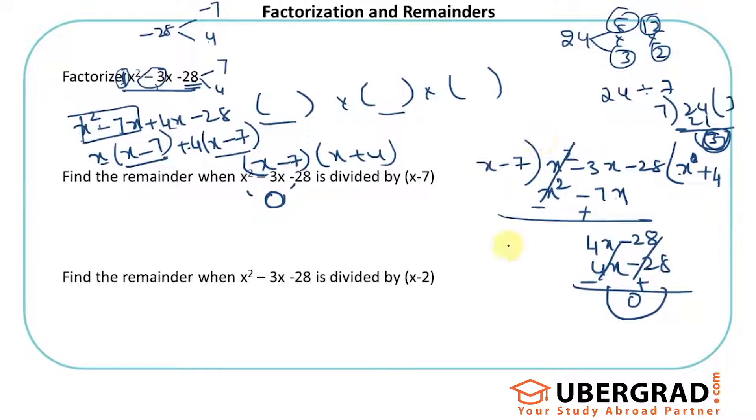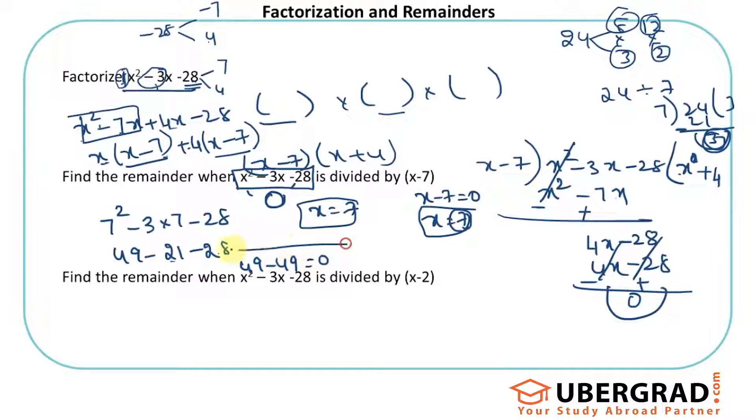Doing this is definitely complicated and time taking. The easier method: when you see find the remainder when some expression is divided by x minus something, just substitute x = 7. I equated x - 7 = 0 to get x = 7. Substitute this in the expression: 7² - 3(7) - 28 = 49 - 21 - 28 = 0. So the remainder is 0.